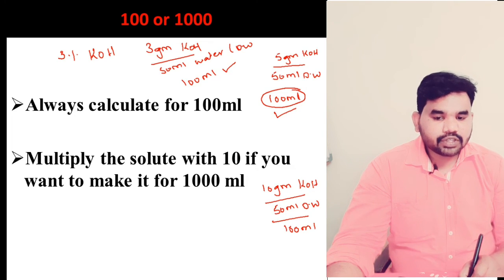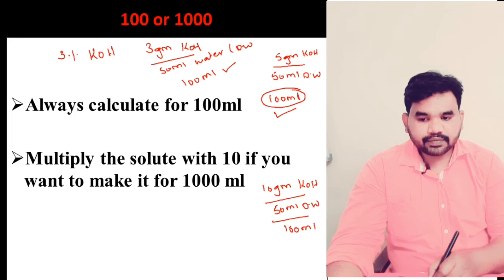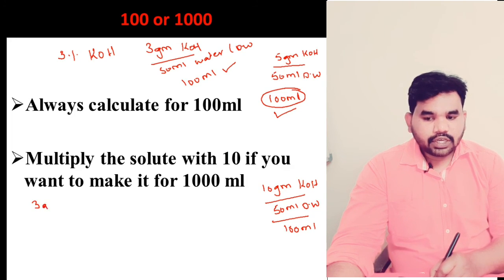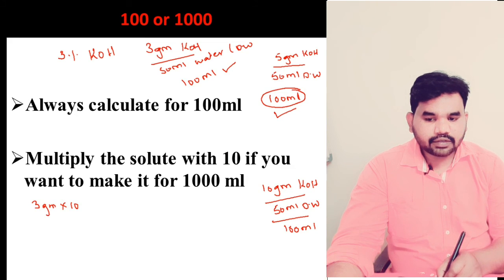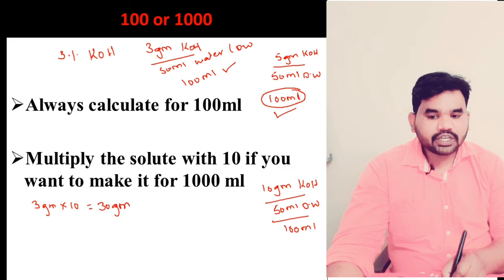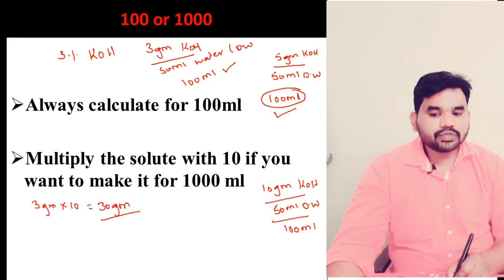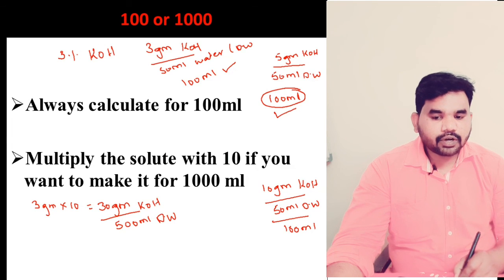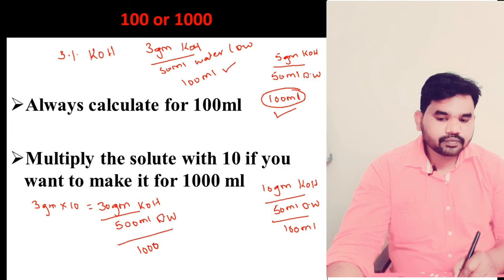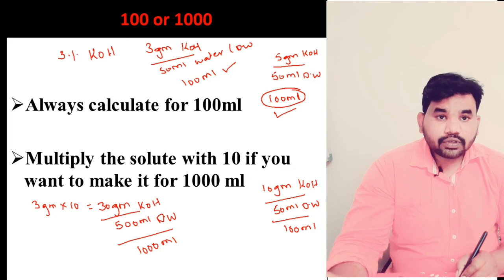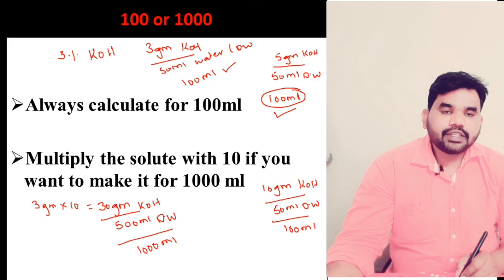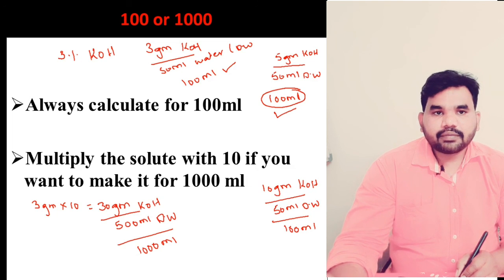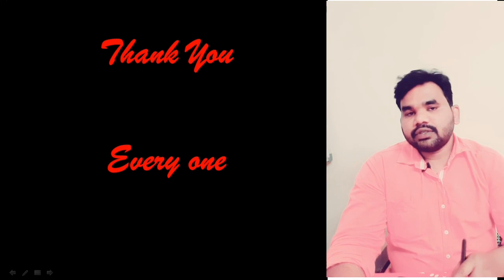If you want to prepare it for 1000 ml, then for 3% KOH: 3 grams multiplied by 10 equals 30 grams. So you have to take 30 grams of KOH, add it to 500 ml of distilled water, and make the volume up to 1000 ml. Percent solutions should always be calculated for 100 ml first, and when scaling to 1000 ml, multiply by 10. This is how you prepare percent solutions in the laboratory. Thank you everyone.